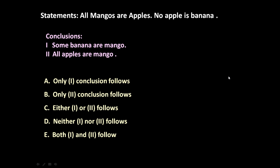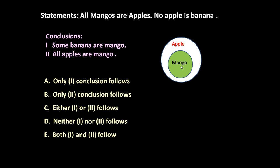So let us represent it through the Venn diagram. All mangoes are apples, no apple is banana. So there is no relationship between apple and banana.